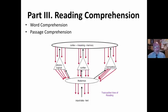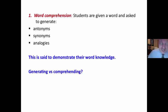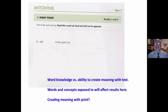Part three, reading comprehension. This is probably the closest reflection of a transactive view of reading. However, students are given a word and asked to generate antonyms, synonyms, and analogies. This is said to demonstrate their word knowledge, but generating these things versus comprehending or creating meaning with print — I don't know that this necessarily reflects students' ability to create meaning with print.